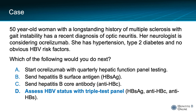The answer is D — you would send the triple test panel that includes the surface antigen, core antibody, and surface antibody. You need all three results to fully characterize a patient's HPV status.